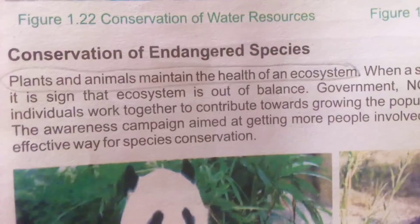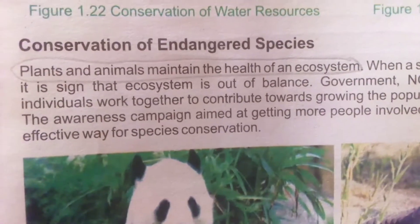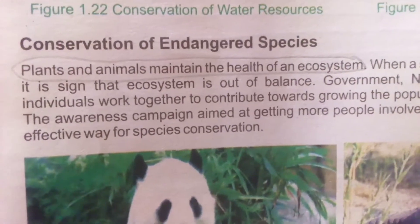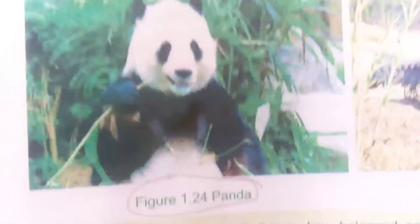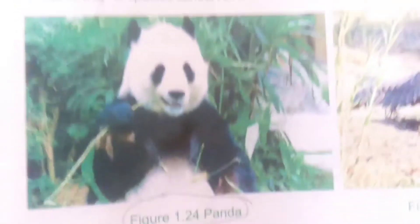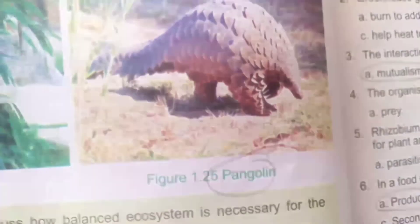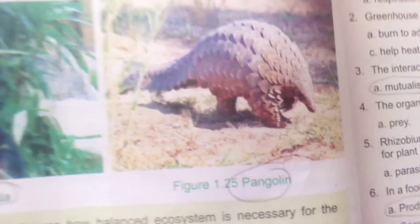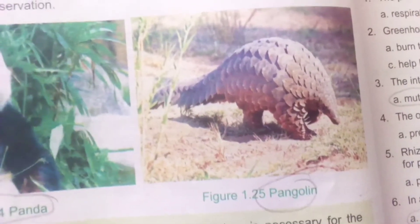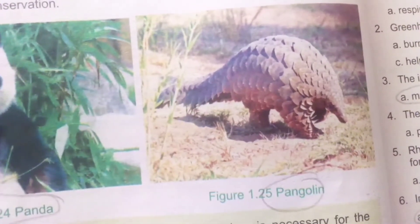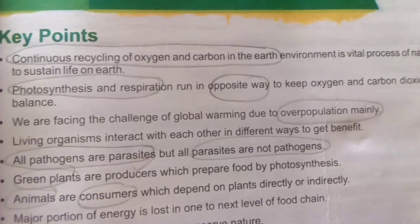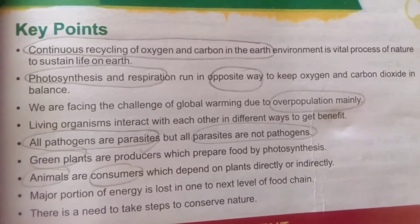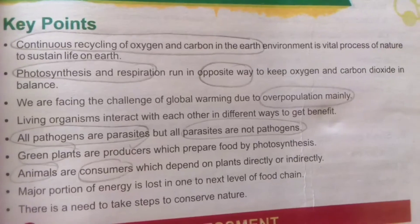Plants and animals maintain the health of an ecosystem. The panda and pangolin are two endangered species — their existence is at risk. Continuous recycling of oxygen and carbon in the Earth's environment is a vital process of nature to sustain life on Earth. Photosynthesis and respiration run in opposite ways.